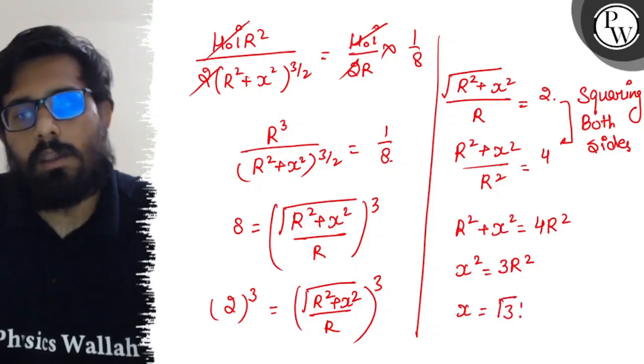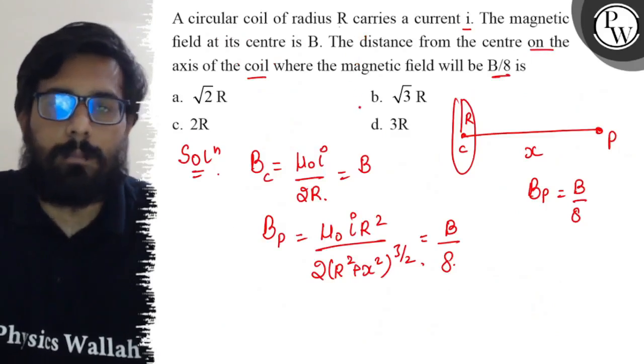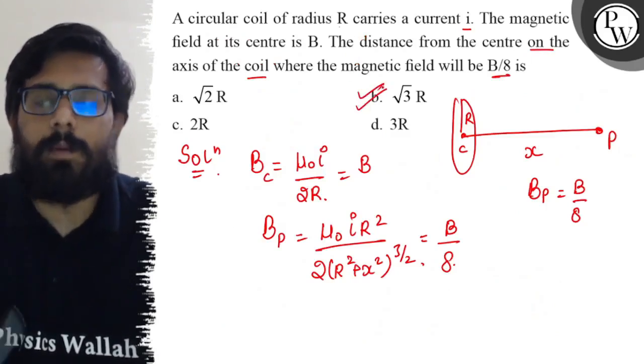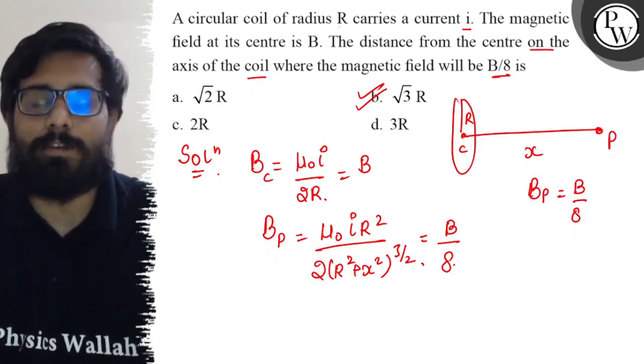So the distance comes out to be √3R, which is our option B. So option number B is absolutely correct, and I hope you got the concept of this question as well. All the very best.